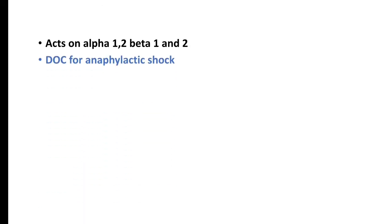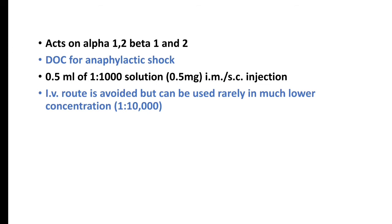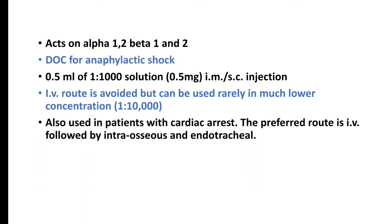Adrenaline is the drug of choice for anaphylactic shock: 0.5 ml of 1:1000 solution given intramuscularly or subcutaneously. Pay attention to the concentration — 1:1000 — this is an MCQ that has been asked a few times. The IV route is avoided, but can be used rarely at a much lower concentration of 1:10,000.